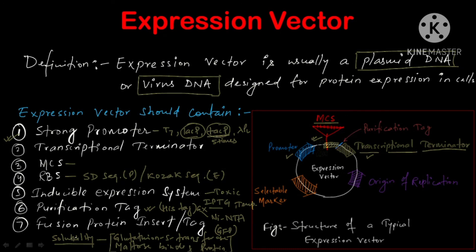These are a few important characteristics of the expression vector. The typical structure of an expression vector is: first the promoter, then the RBS, then the MCS where you can insert your gene of interest along with the fusion insert or purification tag — normally a 6× His-tag. Then there is the origin of replication, and selectable markers, so that we can confirm that our gene of interest has been transformed into the host cell.